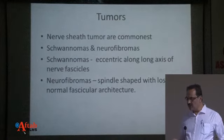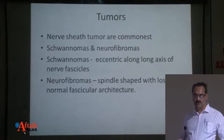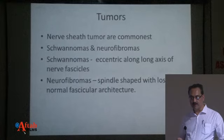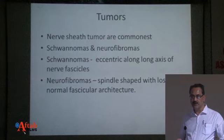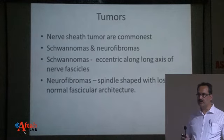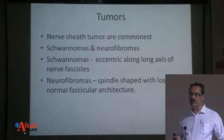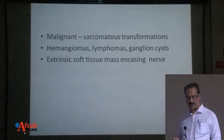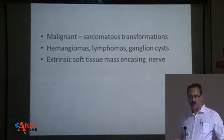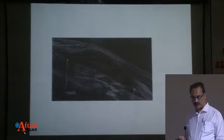Peripheral nerve tumors are common. Nerve sheath tumors are the commonest, known as schwannomas or neurofibromas. Schwannomas have an eccentric location extending along the long axis of the fascicles, while neurofibromas are spindle-shaped with loss of normal fascicle architecture. Color Doppler is helpful — neurofibromas show vascularity whereas schwannomas do not. Tumors can also be malignant, including hemangiomas, lymphomas, and extrinsic soft tissue masses encasing the nerve, which can be diagnosed on ultrasound and may not be identifiable on MRI.